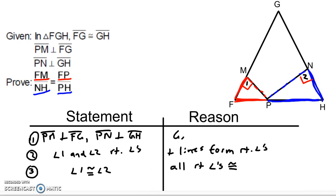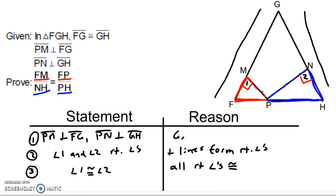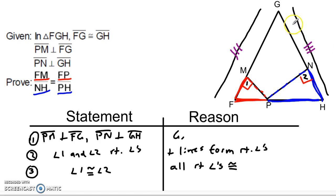Now we just have to find a second pair to say that they're similar. Take a look at this other given: FG congruent to GH. FG is this entire side, GH is this entire side. So this piece is congruent to this piece. It might not be obvious immediately how that's going to help us, but in fact that tells you that the large triangle is isosceles. And if it's isosceles, that means opposite these congruent sides we're going to have congruent angles. So angle F in the big triangle is congruent to angle H in the big triangle. But those are angles in our little triangles as well, so that's going to be our second pair of angles, making these triangles angle-angle similar.